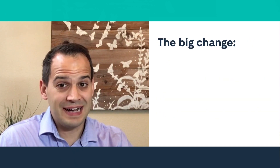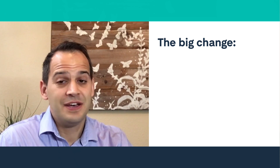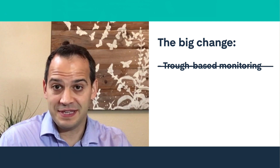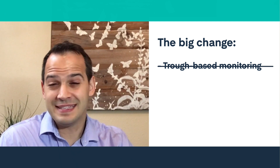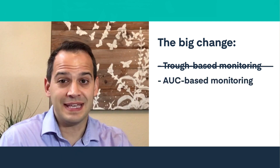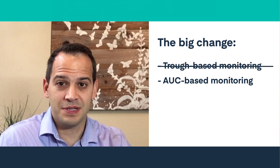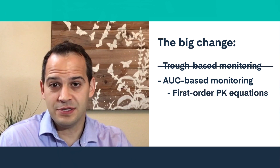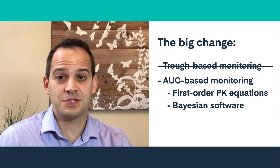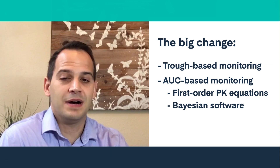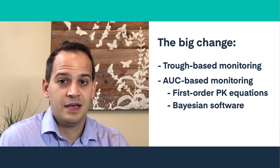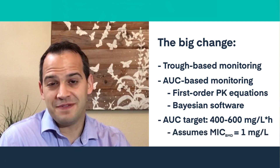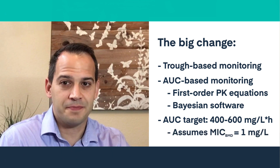The one big guideline change we have to say up front: trough-based monitoring is no longer recommended for patients with serious MRSA infections. Instead, the guidelines now recommend using AUC-based vancomycin dosing and monitoring using either first-order PK equations or the preferred Bayesian dosing software program. The AUC target is 400 to 600, assuming a vancomycin MIC of one milligram per liter.